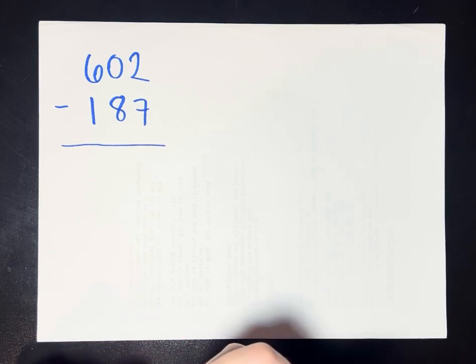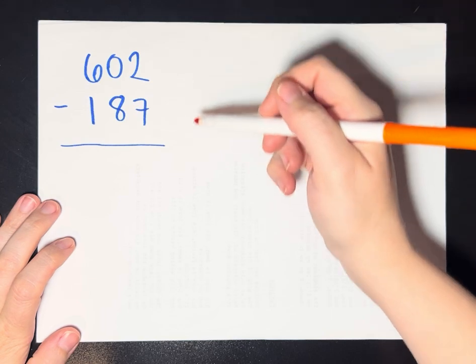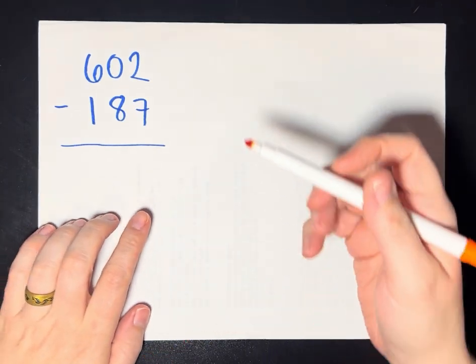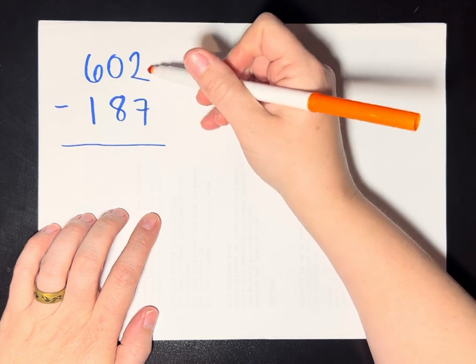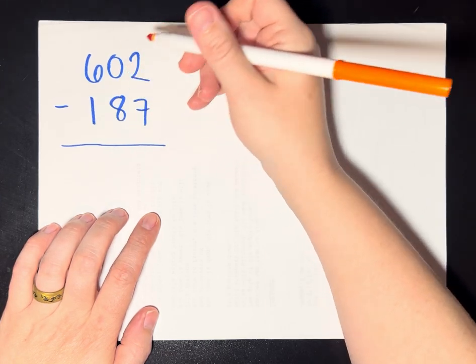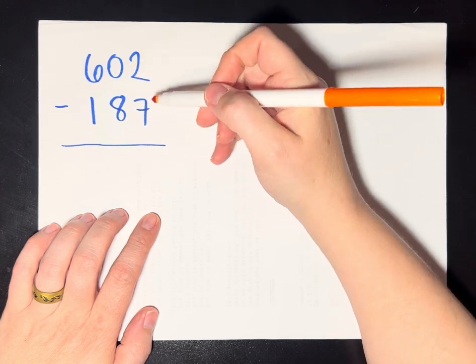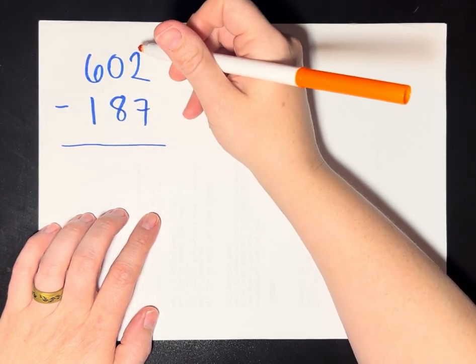And the thing that we're going to do here is I'm still going to write it kind of like I do the normal algorithm. And I'm going to start in the ones place, like I usually do, and I'm going to try to take away 7 from 2. There's not enough without going into negative numbers, so I need to borrow in order to have enough 1s in order to do this.